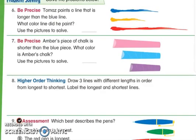Then I'm gonna help you out. So this is the one that I want you to try: Thomas paints a line that is longer than the blue line. What color line did he paint? Use the pictures to solve. So we are going to compare these lines.